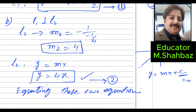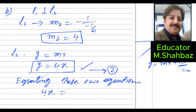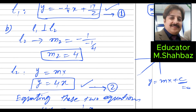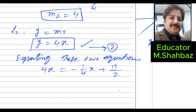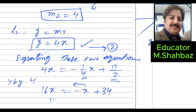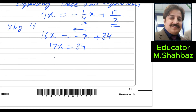To solve 4x = -1/4·x + 17/2, multiply through by 4 — the LCM of 2 and 4 — to eliminate denominators. This gives 16x = -x + 34, so 17x = 34, and therefore x = 2.